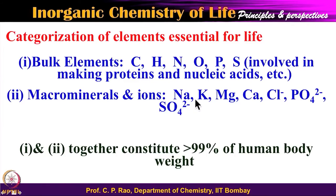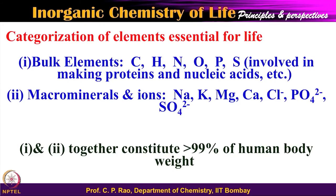Let me recapitulate what we have said and organize this into categories. The elements required in bulk are carbon, hydrogen, nitrogen, oxygen, phosphorus, and sulfur — these are all involved in making the main molecular mantle, for example proteins, nucleic acids, polysaccharides, and lipids. Then the macrominerals: ions like sodium, potassium, magnesium, calcium, chloride, phosphate, sulfate, etc. As seen from the previous slide, together all of these account for more than 99.1%.